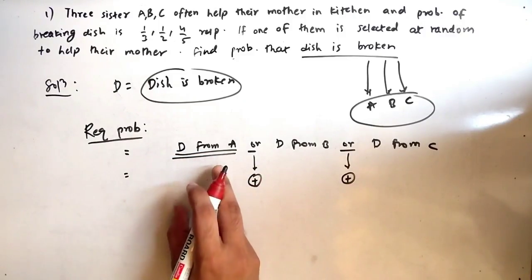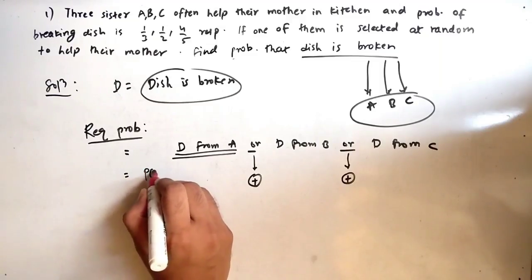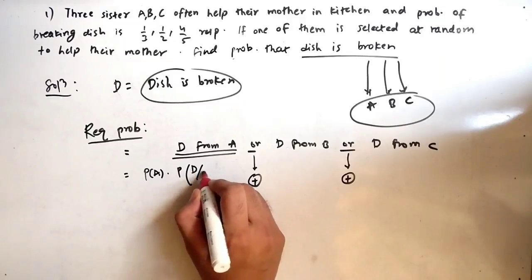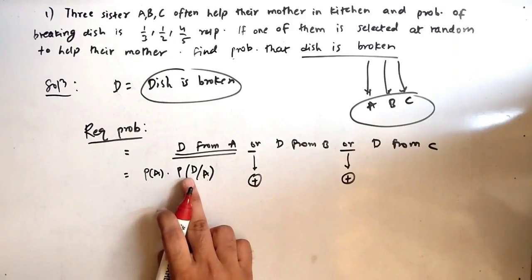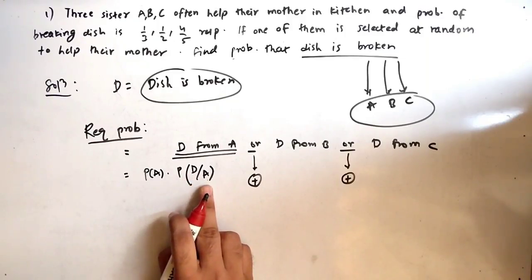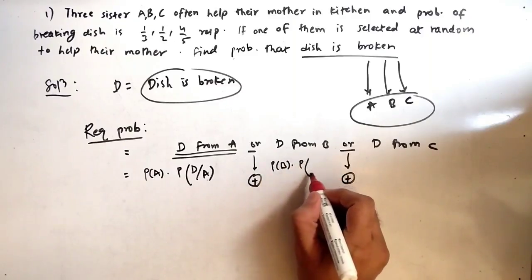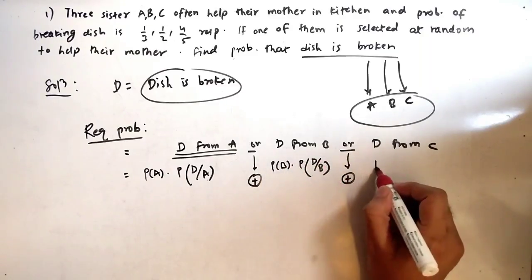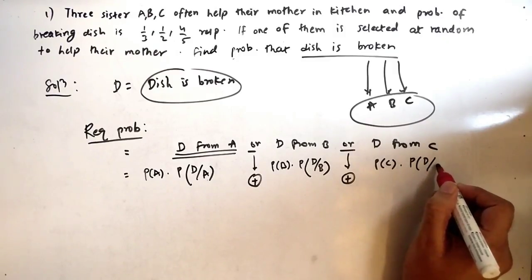Dish is broken from A means we first write the probability of selecting A, multiplied by the probability that the dish is broken given A — that is P(A) × P(D|A). Similarly, P(B) × P(D|B), and P(C) × P(D|C). So we need to find all six terms: the three selection probabilities and the three conditional probabilities.